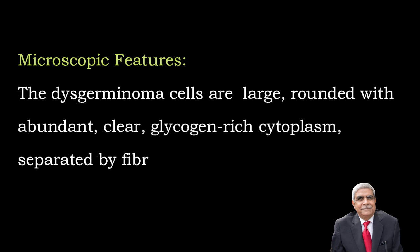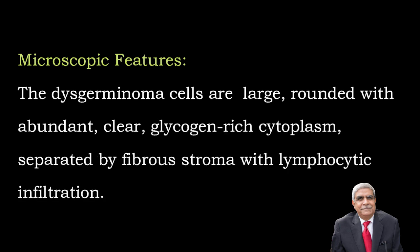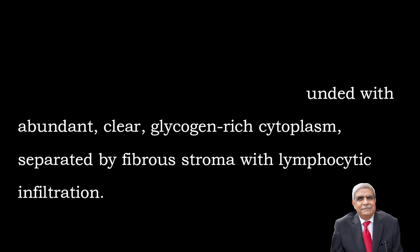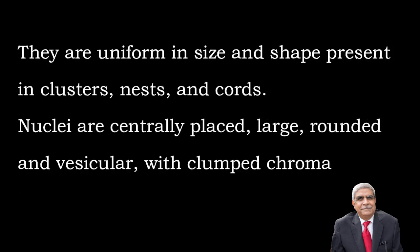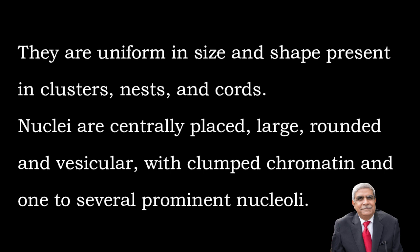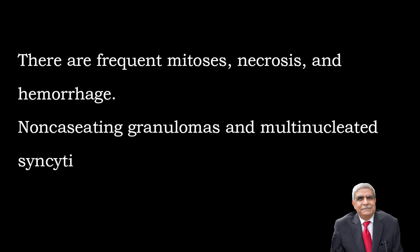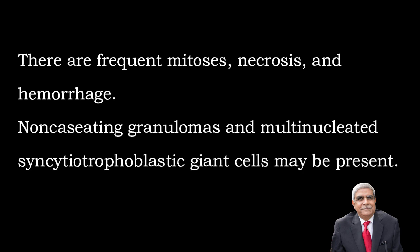Microscopic features: The dysgerminoma cells are large and rounded with abundant clear glycogen-rich cytoplasm, separated by fibrous stroma with lymphocytic infiltration. These cells are uniform in size and shape, present in clusters, nests, and cords. The nuclei are centrally placed, large, rounded, and vesicular with clumped chromatin and one or more prominent nucleoli. There are frequent mitoses, necrosis, and hemorrhages.